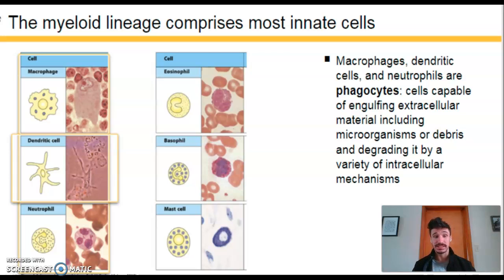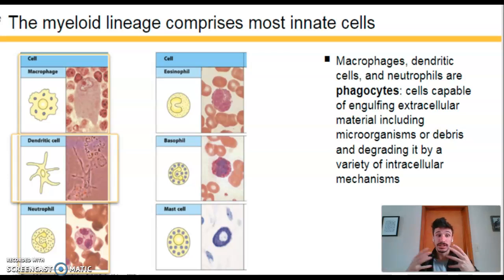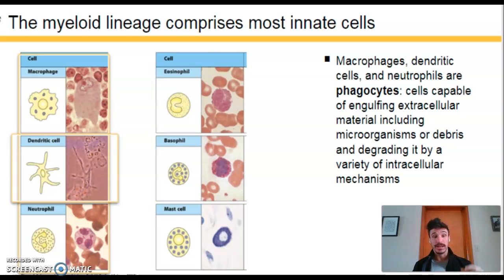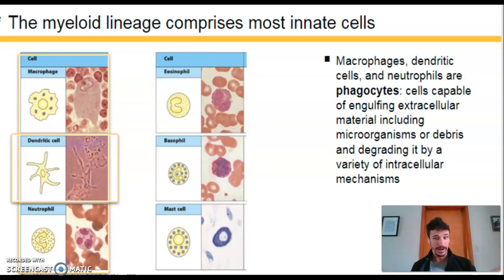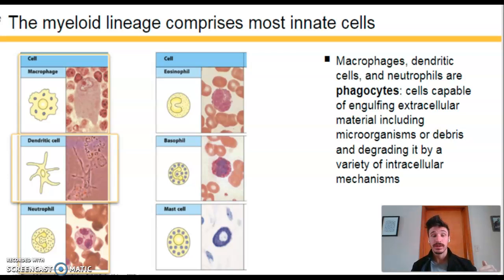The pathogen is broken into pieces, and some protein components get shuttled to the cell membrane and displayed on the surface. Macrophages and dendritic cells then become antigen-presenting cells, presenting these protein antigens to T cells of the adaptive immune response. This activates the adaptive immune response and produces a degree of memory, so that reinfection with the same pathogen won't take up to 96 hours to trigger a response.